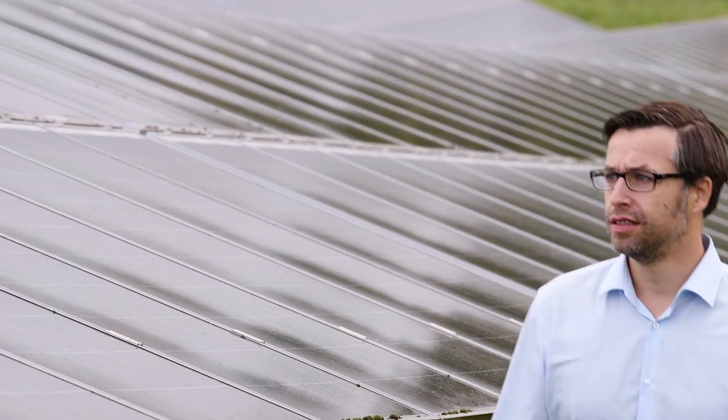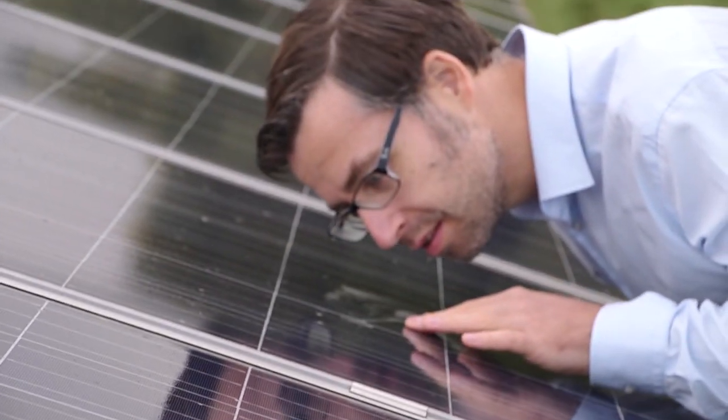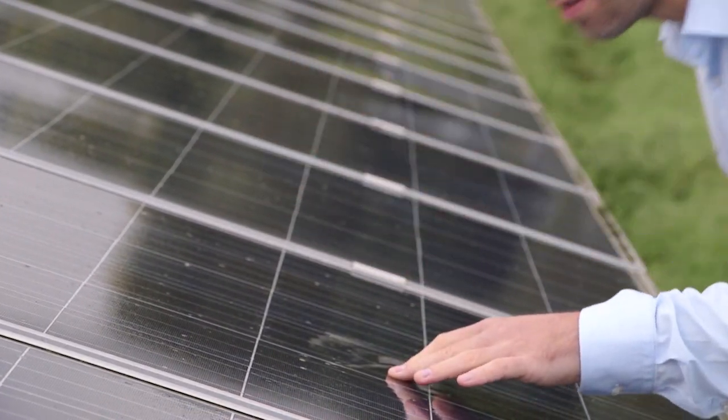When you see solar cells in the field, you usually don't realize that this is actually a stack of different materials composed of different elements, and they all interact with each other. And this is what makes solar cells so fascinating, but also so complicated.